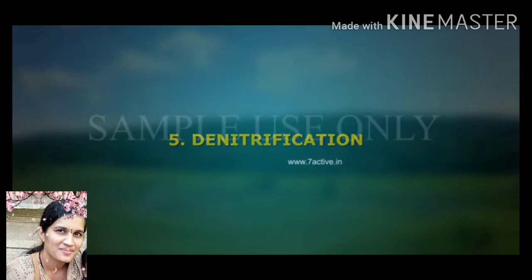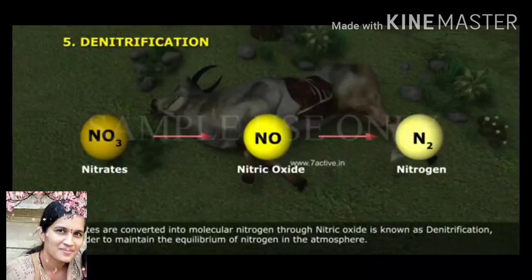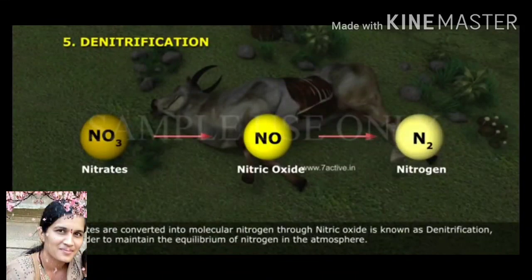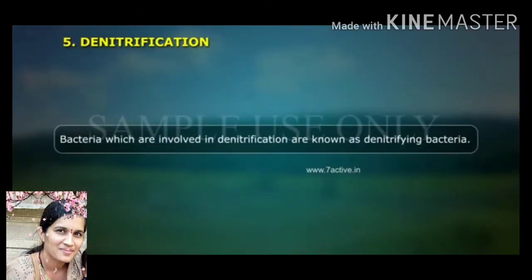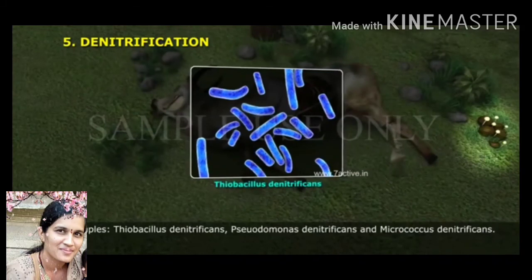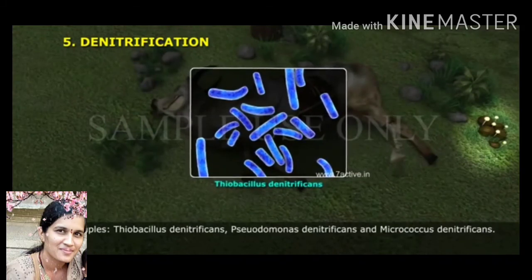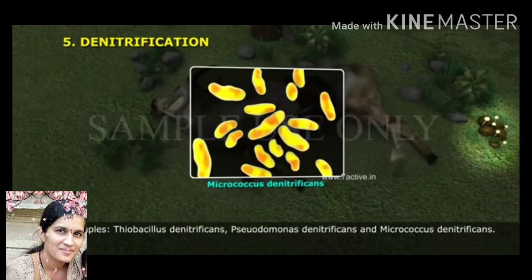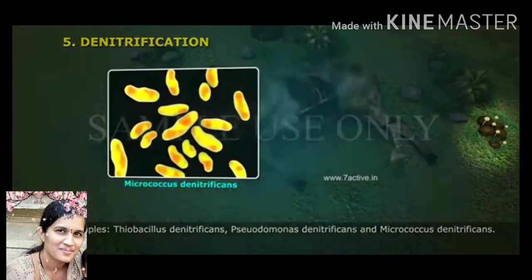Denitrification: here, nitrates are converted back into molecular nitrogen through nitric oxide, which is known as denitrification. In order to maintain the equilibrium of nitrogen in the atmosphere, denitrification is very necessary. Bacteria involved in denitrification are known as denitrifying bacteria. Examples are Thiobacillus denitrificans, Pseudomonas denitrificans and Micrococcus denitrificans.